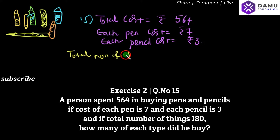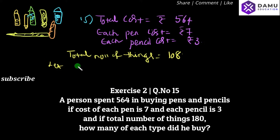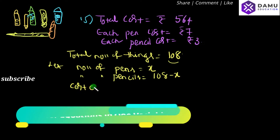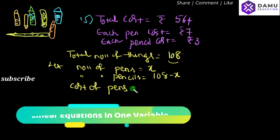The total number of things is equal to 108. Let the number of pens be equal to x. Then the number of pencils will be equal to 108 minus x, because we subtract x pens from 108 to get the number of pencils.